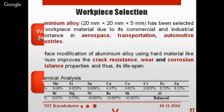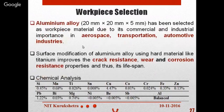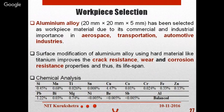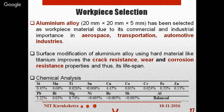The study was carried out in different steps. First, workpiece selection: an aluminum alloy of size 20 mm × 20 mm × 5 mm was selected due to its commercial and industrial importance in aerospace, transportation, and automotive industries. Surface modification of aluminum alloys using hard materials like titanium improves crack resistance, wear, and corrosion resistance, extending its lifespan. Chemical analysis confirmed the alloy contains manganese and chromium.